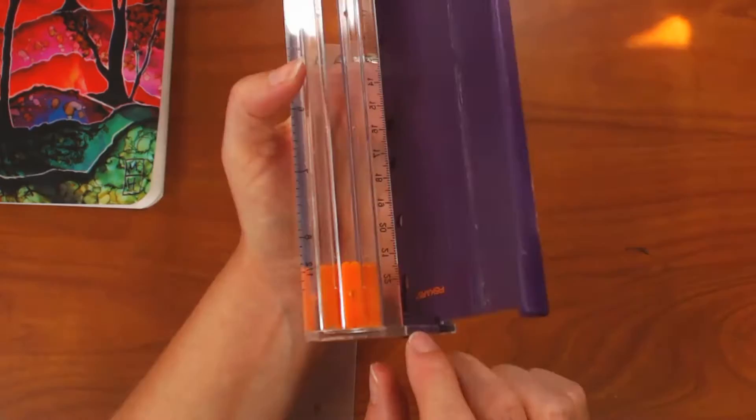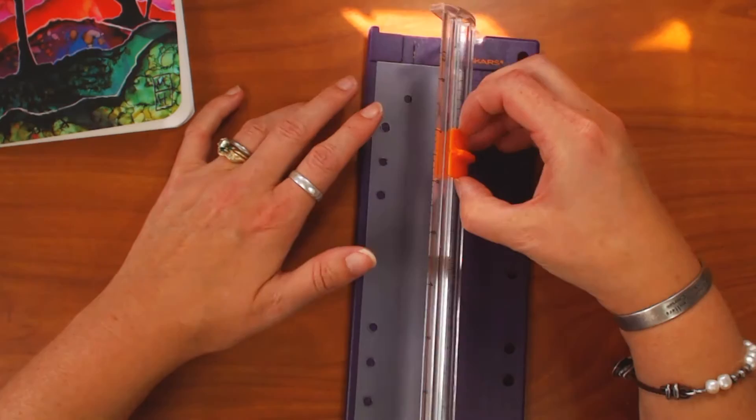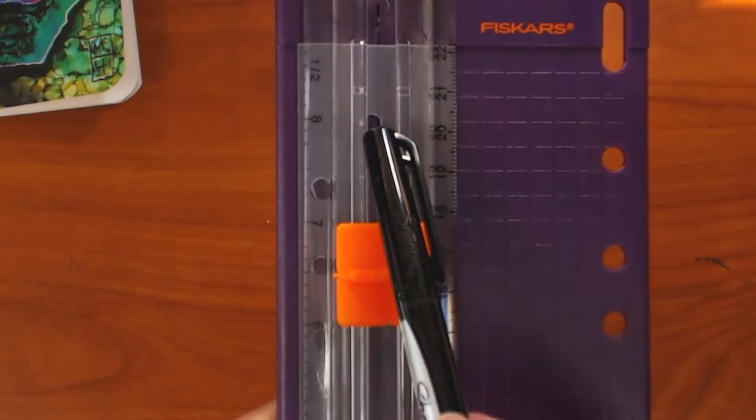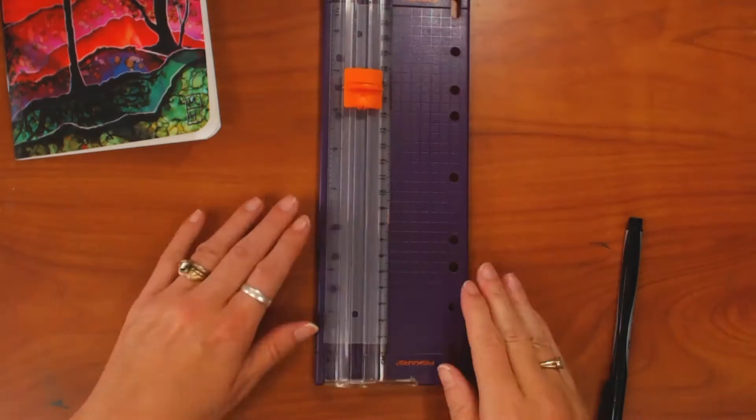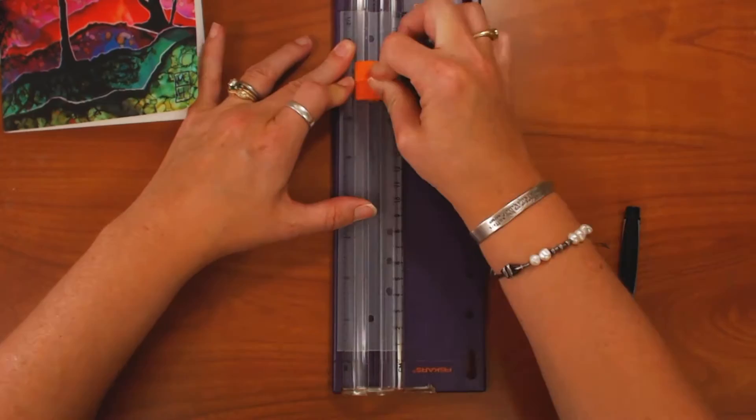Now here I take a Fiskars cutter that has one of the sharp pointy cutters rather than the wheels. And I'm just lining up those two holes that I punched in the middle. I want the right sides of the holes right on the edge of the cutting line because I'm going to be cutting out a slot out of this plastic. So I line that up and then I just simply start the cut in the middle of the plastic and I cut up to one hole and then I cut down to the next hole. And then I just simply turn it over and I repeat the same thing.